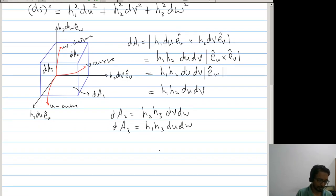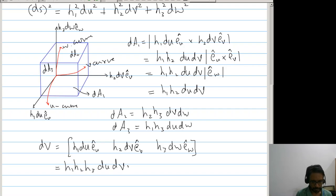Now the volume of the parallelepiped is given by the box product. So dV is the box product of h1 du e_u, h2 dv e_v, h3 dw e_w. This will be h1 h2 h3 du dv dw times the box product of e_u, e_v, e_w. Now the box product of these three vectors will be equal to 1, so the volume element will be h1 h2 h3 du dv dw.